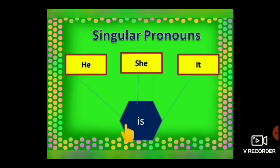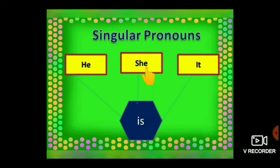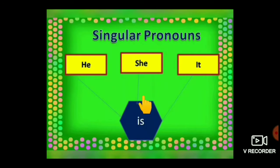Children, we use IS when the subject is a singular pronoun also. As you know, for one boy we use HE, for one girl we use SHE, and for one thing or any one animal we use IT. So we use IS for singular pronouns: HE is, SHE is, IT is.